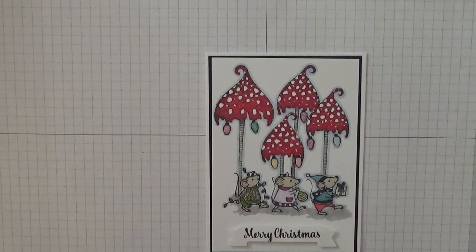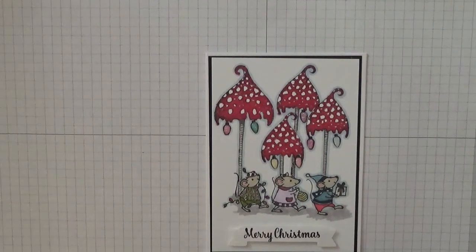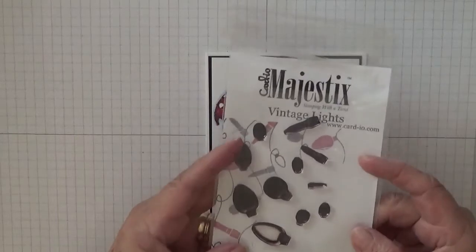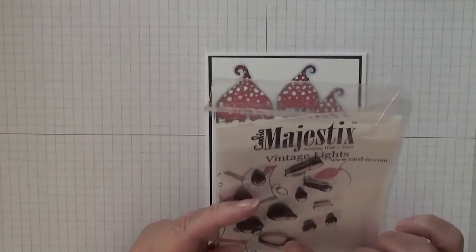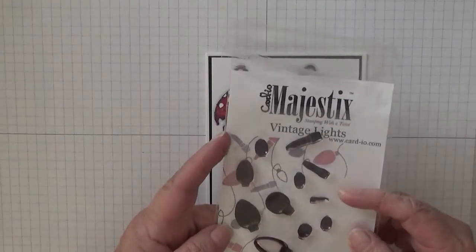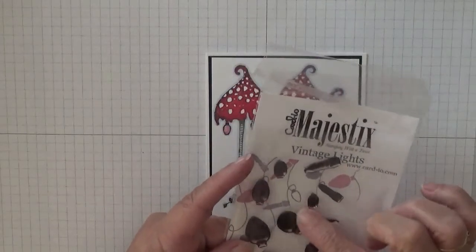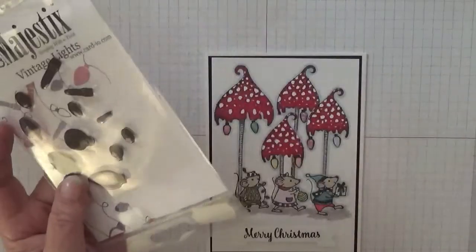I also used another Cardio stamp set, the vintage lights. There's a little tiny one which I'm going to use for the trees.